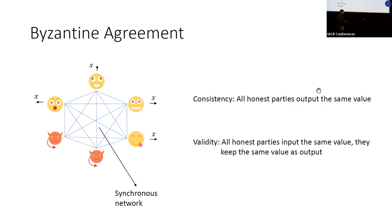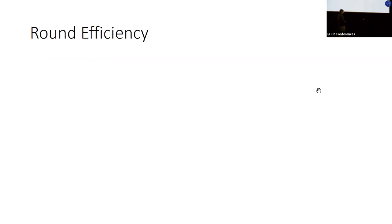In this paper we focus on the synchronous model, where parties have synchronized clocks and are connected via a complete network of point-to-point authenticated channels with some known delay. We describe the protocol as proceeding in rounds — a message sent in some round is guaranteed to be delivered before the next round. In this model, a crucial efficiency metric is the round complexity: how many rounds do we need to achieve Byzantine agreement?